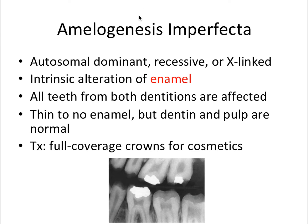Amelogenesis imperfecta is an intrinsic alteration of the enamel layer, so it only impacts the enamel — the dentin and pulp are completely normal. All teeth from both dentitions, both primary and permanent, are affected. On the x-ray you can see very thin or no enamel at all; usually there's a visible difference in radio density between dentin and enamel, but here the enamel appears completely absent or just very thin. Treatment for cosmetic reasons would be full coverage crowns.